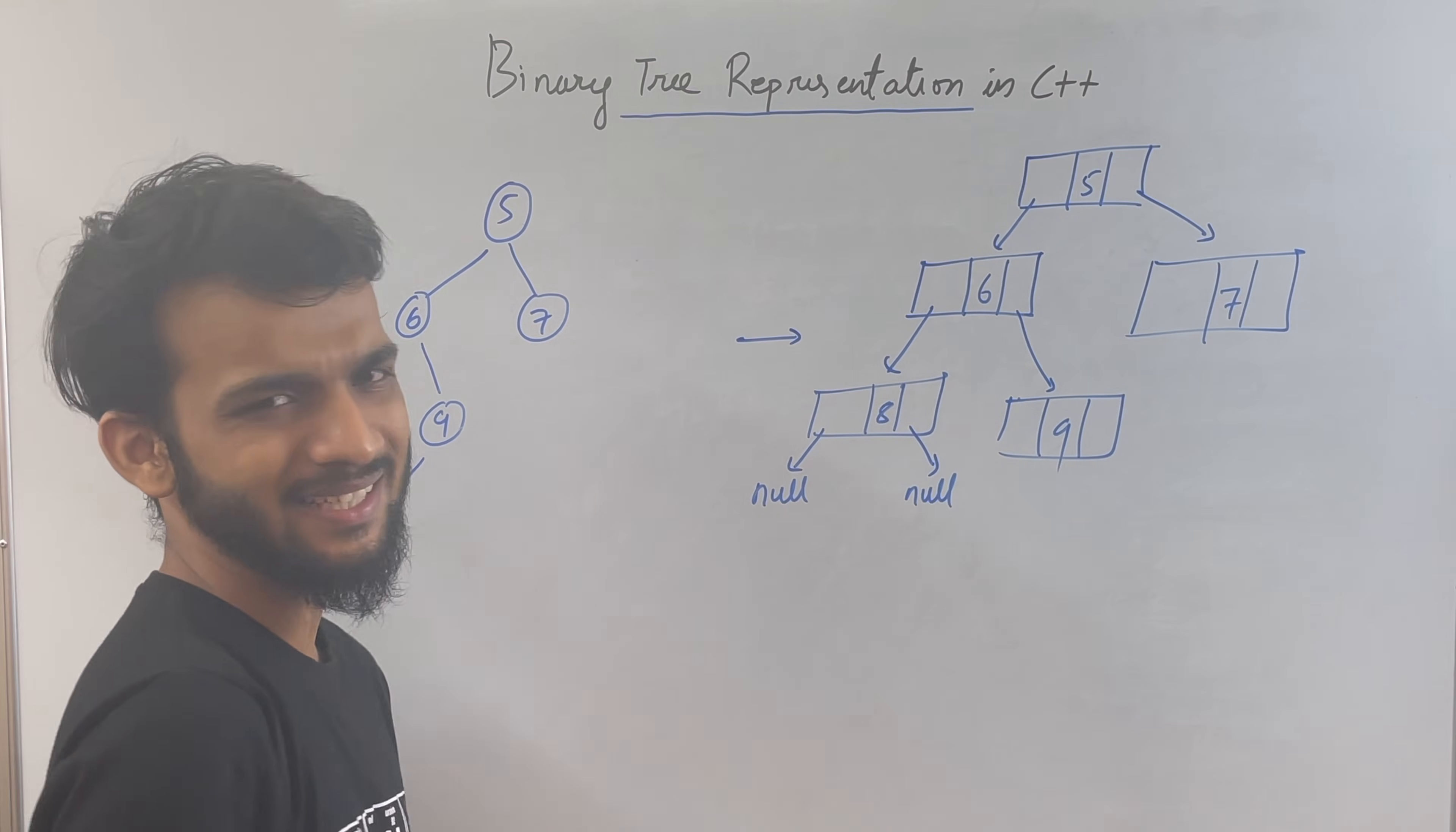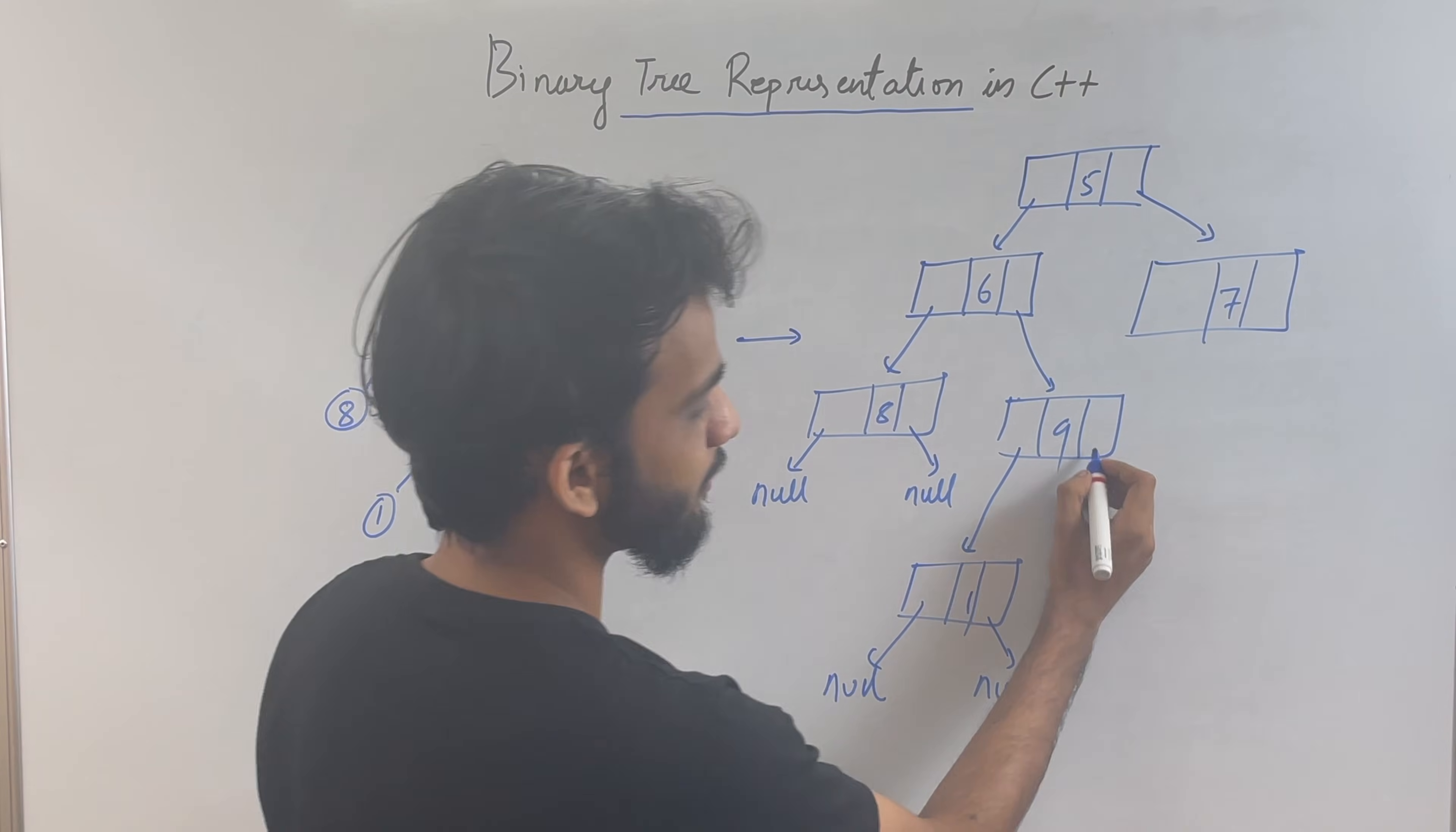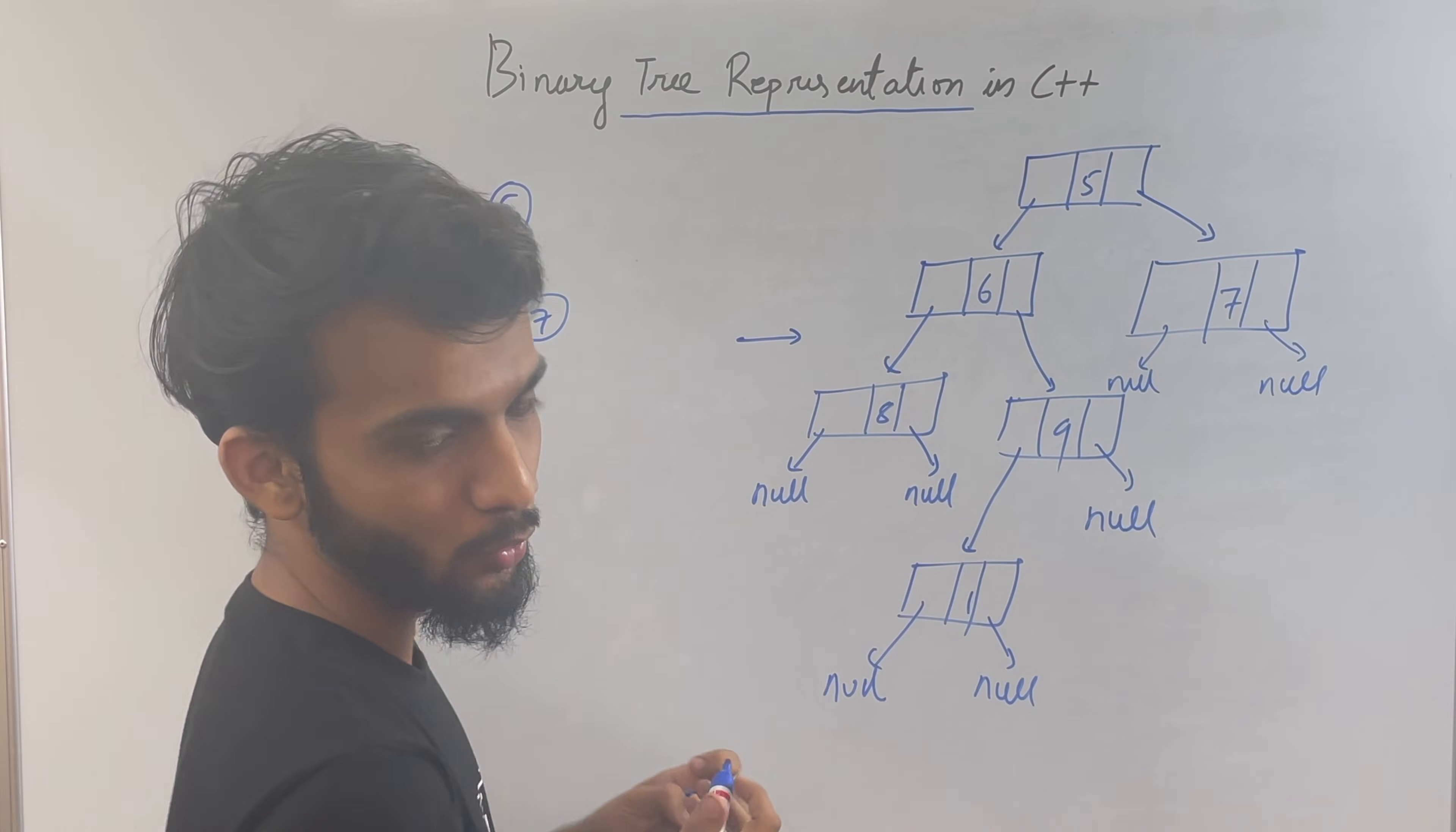In C++, it's a capital NULL. Now, 9 has a left guy, so this left guy will be 1. And again, this left will be null, and this left will also be null. Does this 9 have any right? No. So that will be again null. So in this way, this is also null. So in this way, a tree is basically represented in C++ using pointers. Now, how can you represent them in code? Let's check that out.